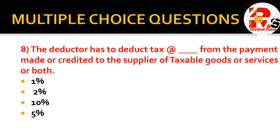Question eight: the deductor has to deduct tax at the rate of dash percent from the payment made or credited to the supplier of taxable goods. For percentage-based questions, you need to remember — the deductor has to deduct one percent tax and credit it to the supplier.